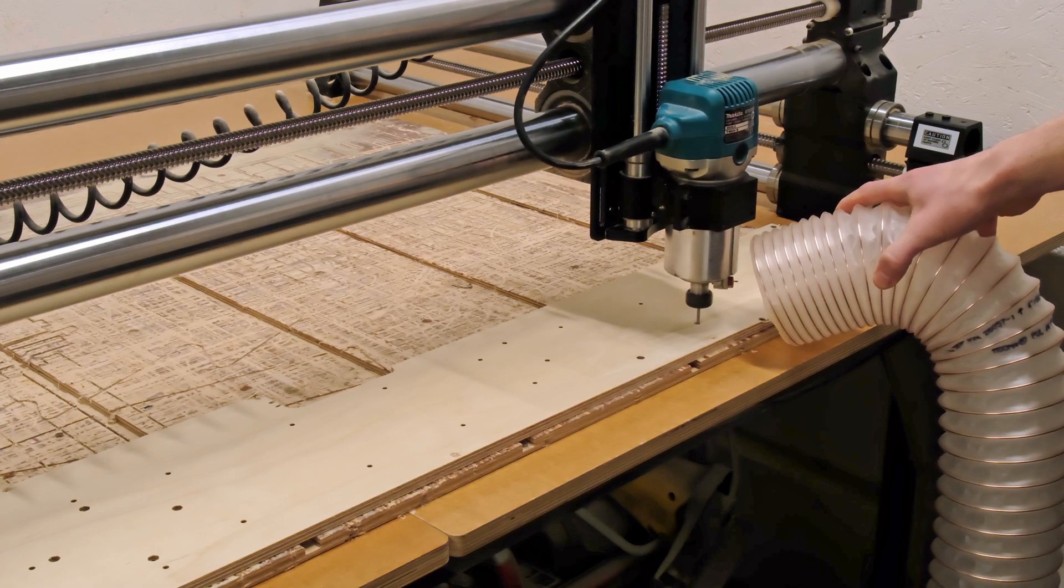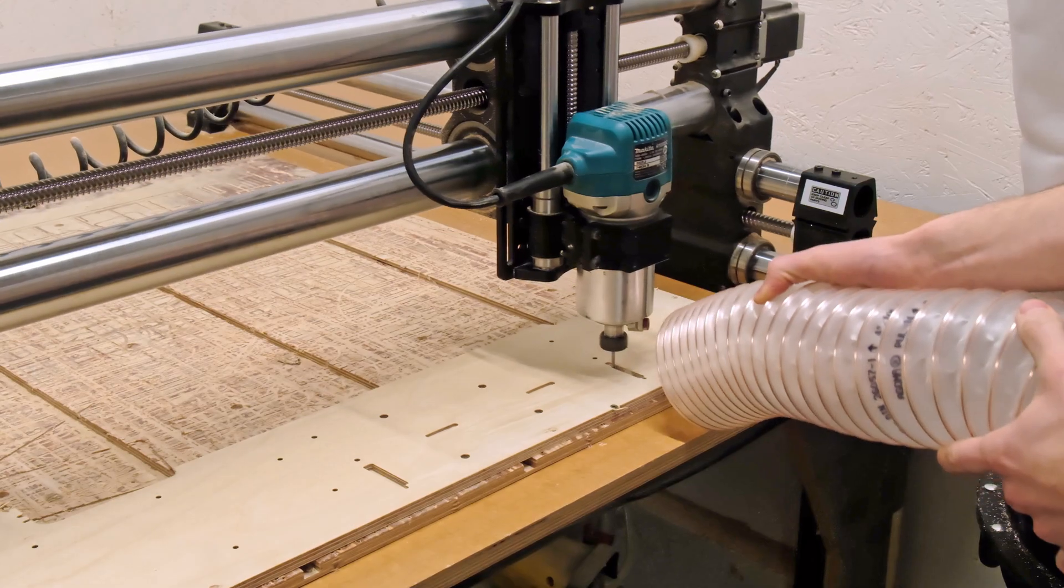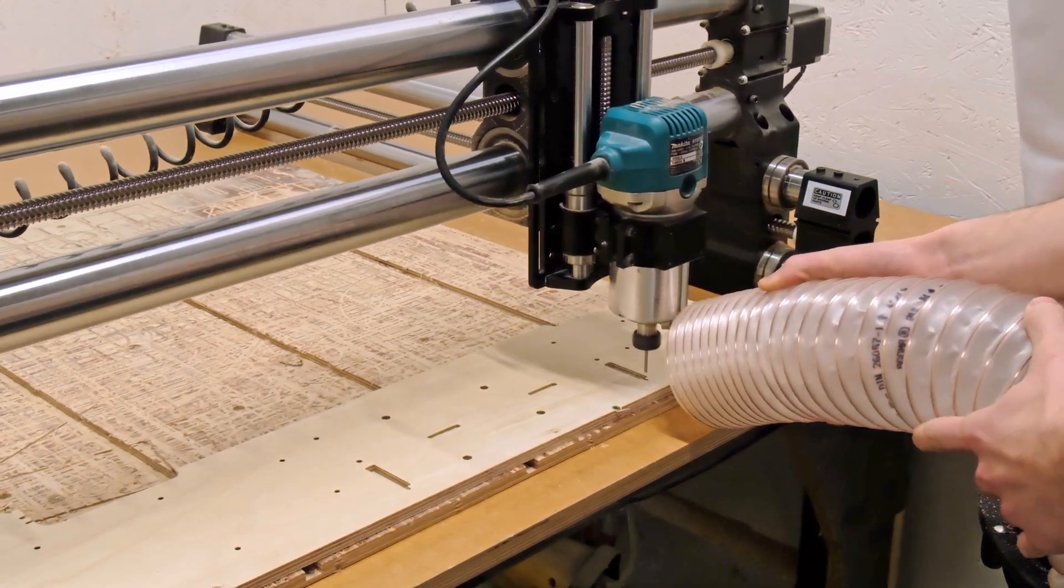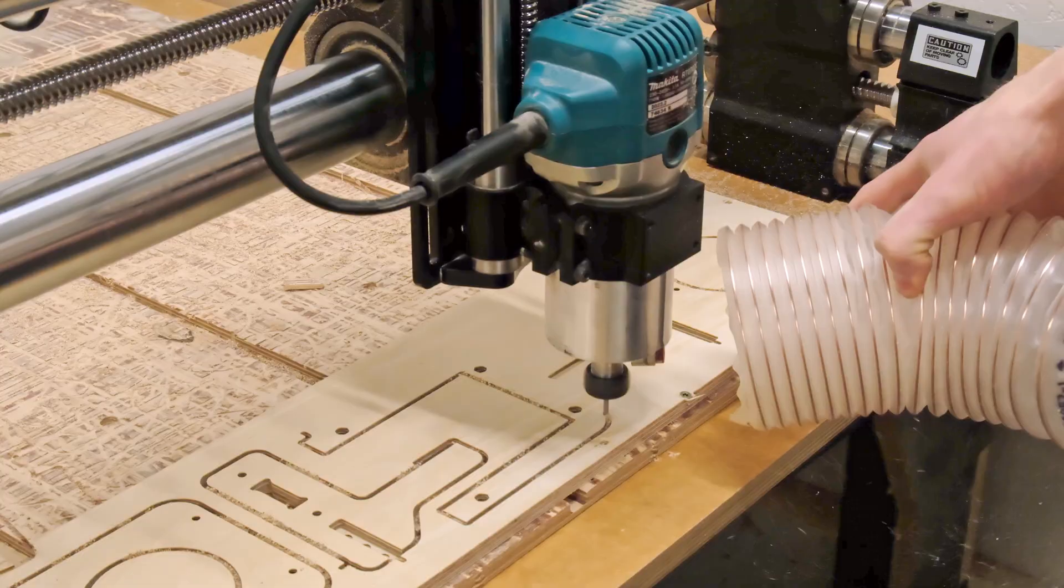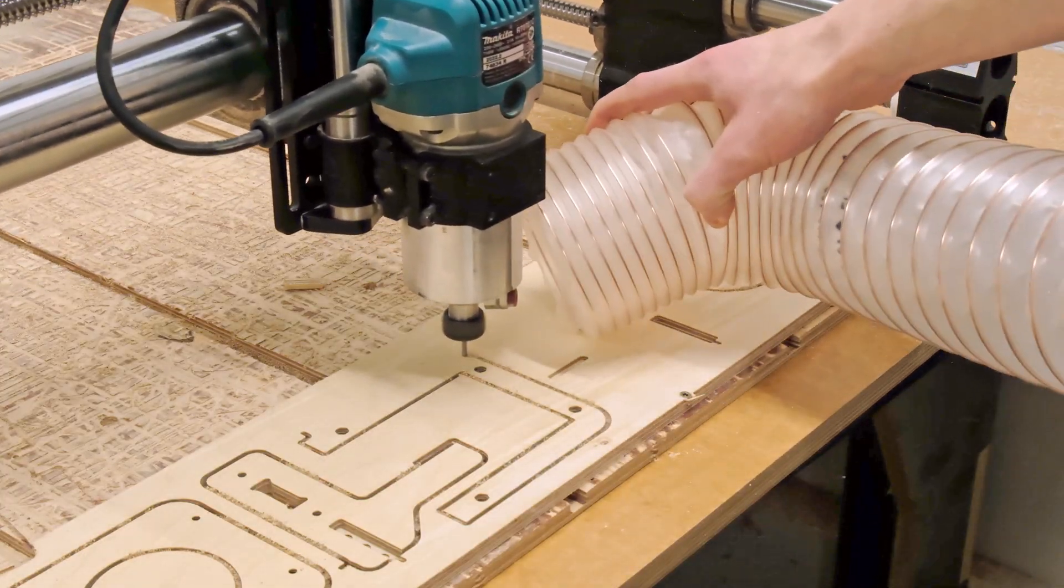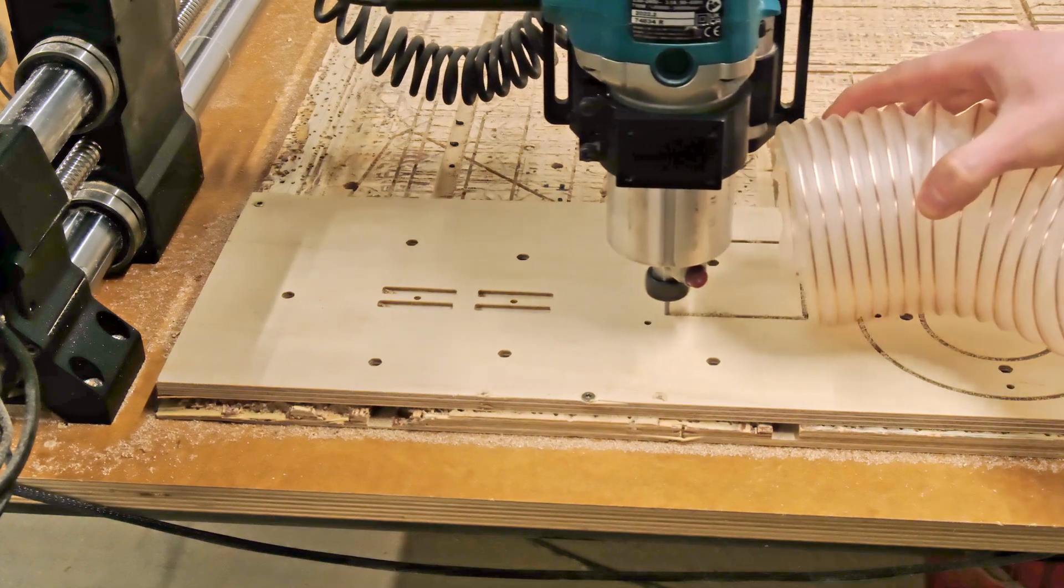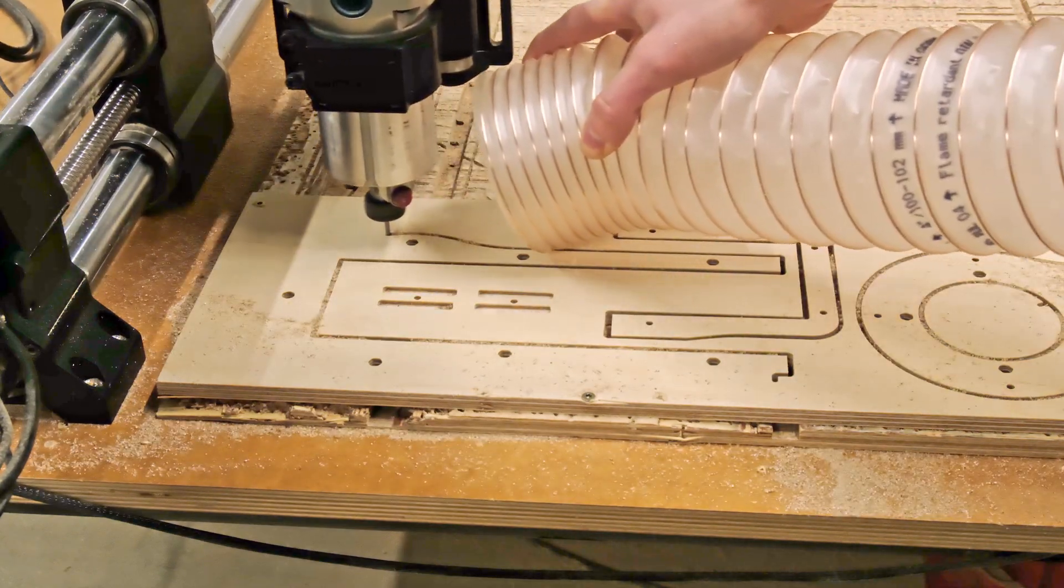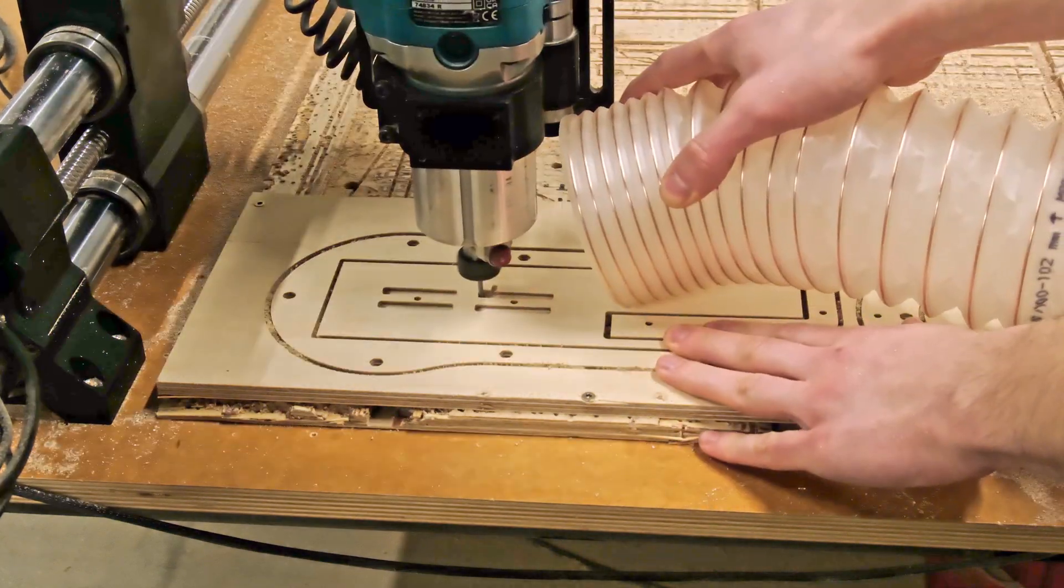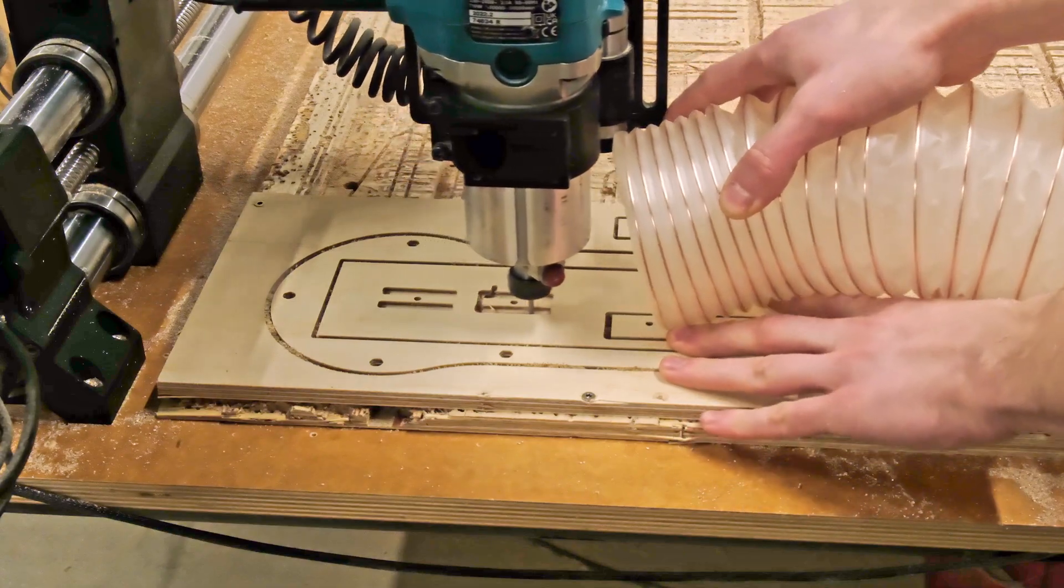While the CNC is cutting the parts, I am keeping the new dust collection on to see how it performs. Since it's sucking 600 cubic meters per hour, it picked up most of the wood dust, even when held in hand next to the spindle. This makes us confident that the new dust collector will be efficient enough for most of our CNC projects.